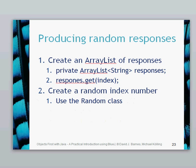In terms of producing random responses, first we need to create an ArrayList of responses, an ArrayList of type string called responses. We then need to call the responses.get method, the ArrayList.get method, and give it a parameter of an index. We need some kind of way of creating the index variable which is going to be random.